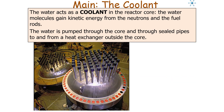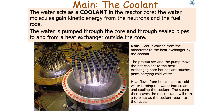The second component to consider is the coolant. Water acts as a coolant in a reactor vessel — water molecules gain kinetic energy from the neutrons and the fuel rods, and the water is pumped throughout the core and through sealed pipes to and from a heat exchanger outside the core. The role of the coolant is to carry heat and exchange it into the actual power station. The pressuriser and pump move the hot coolant to the heat exchanger, where the hot coolant touches pipes carrying cold water, turning that water into steam as the coolant returns to the reactor.